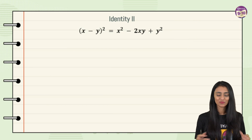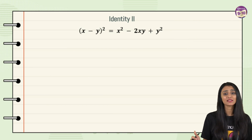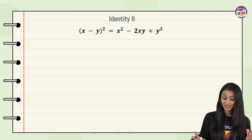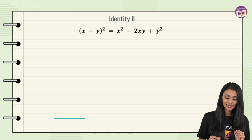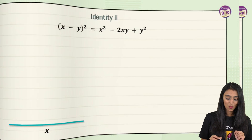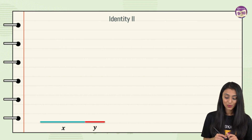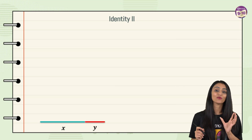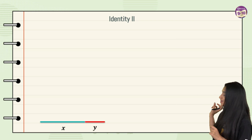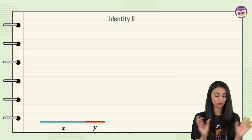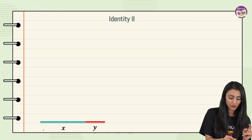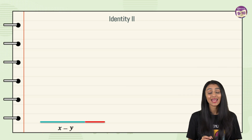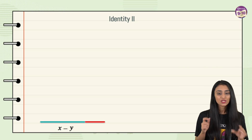Let's move to the next identity, which we also frequently use: (x − y)² = x² − 2xy + y². We already know this — now let's visualize it. Take a line of length x units. This time we need x minus y, so we subtract a line of length y units from x. The red part is subtracted from the blue part, so the reduced length is now x − y.